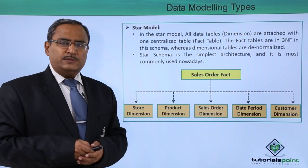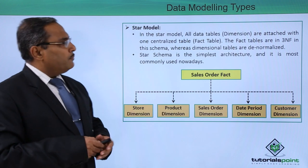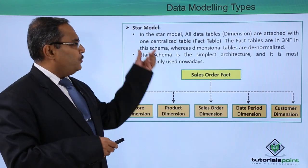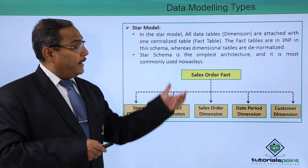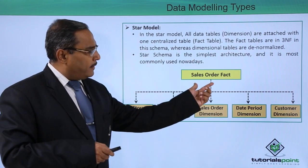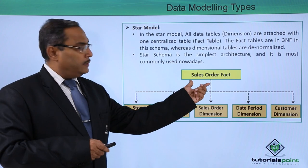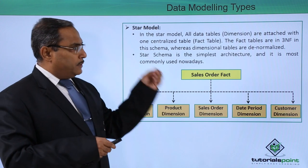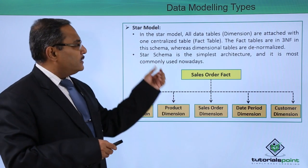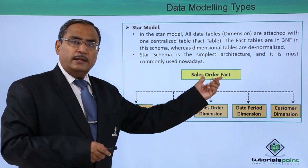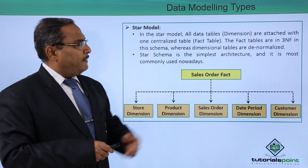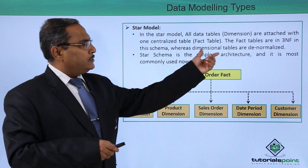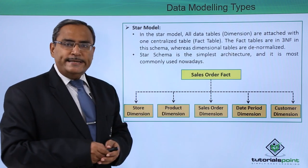Next is the star model. In the star model, all the data table dimensions are attached with one centralized table — the fact table — which is in third normal form (3NF). In the database we have a fact table, for example a sales order fact, and all dimension tables are attached to it.